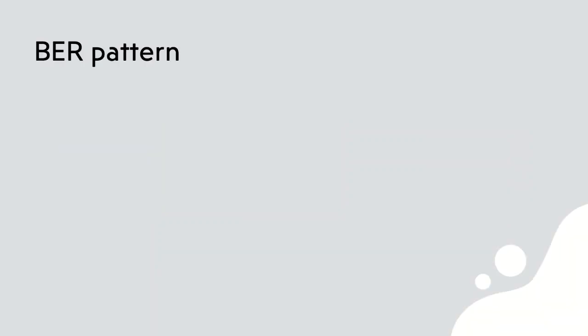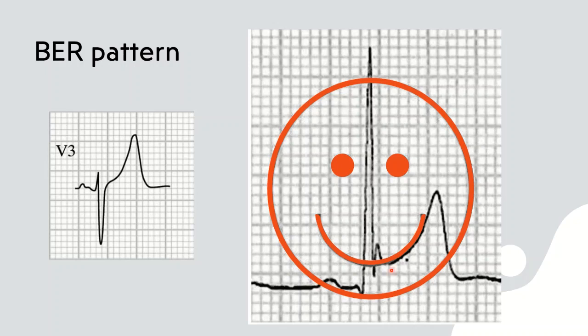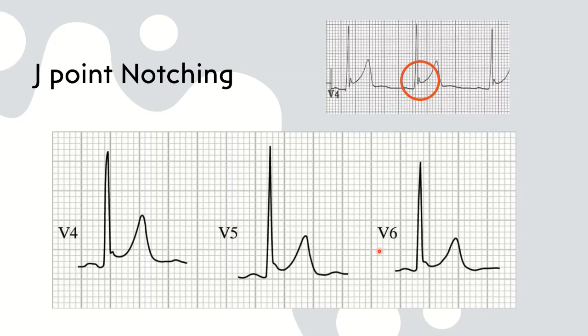Now what's the benign early repolarization pattern? You see it is like half of a smiley face. So this ST elevation takes a concave shape which almost represents half of a smiley face. So let's look for benign early repolarization and just note this notching of the J point. Like I said, the notching of the J point. You see there's a notch here, there's a notch here, there's a notch here. So the notching of the J point is quite important.